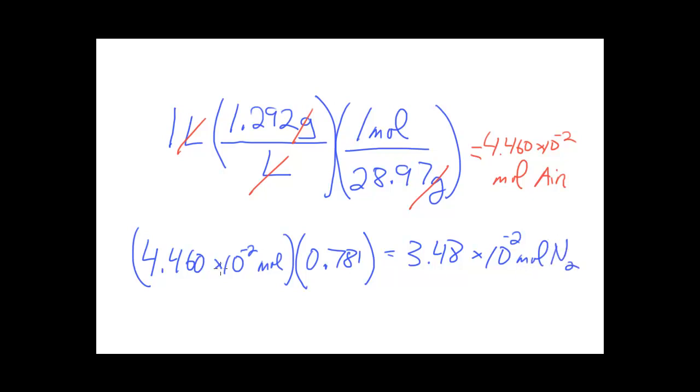Now what I can do is take that moles of nitrogen and convert that to mass of nitrogen by multiplying that value by the molar mass of N2. And I get the molar mass of N2, of course, by adding up the relative atomic mass of two nitrogen atoms, each being 14.01. So I would get 28.02 grams in one mole of N2. This converts that mole value of N2 to mass of N2. And I get, as my answer, 0.976 grams of N2 in a one liter sample of air under the composition conditions I gave in the problem.